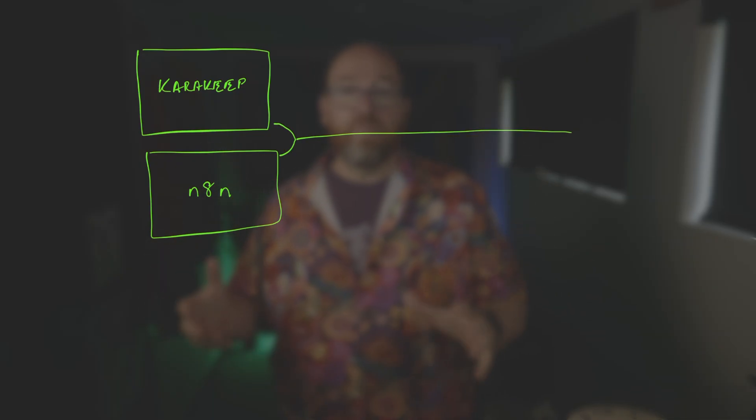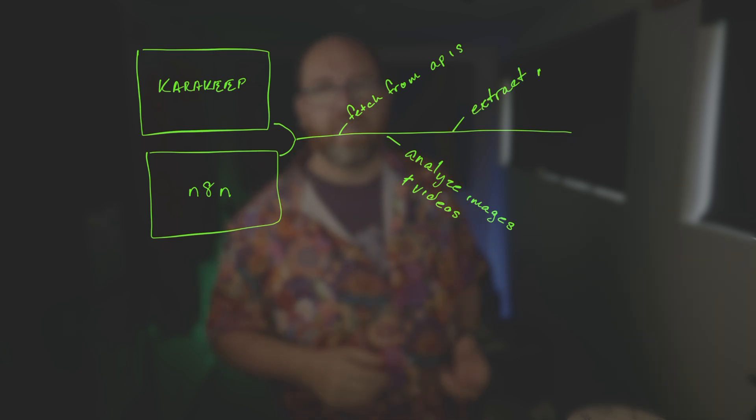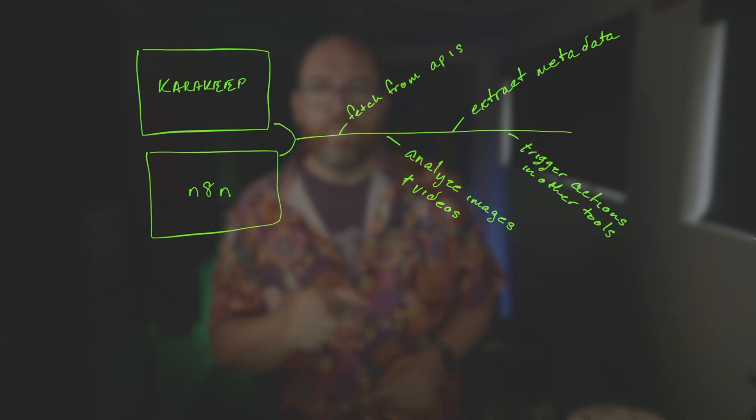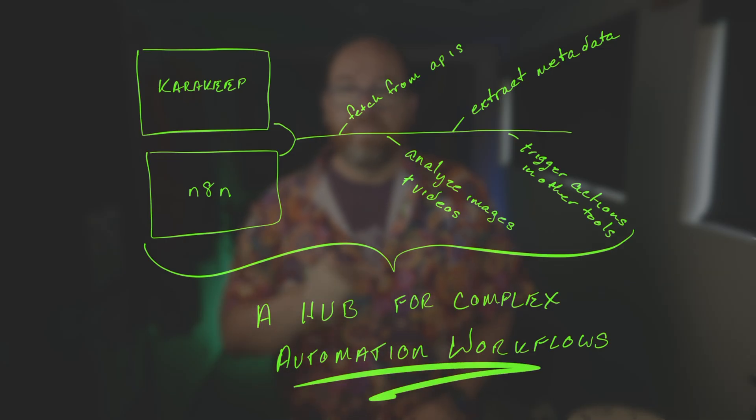But here's what makes using N8N with KaraKeep so powerful: you're not just limited to text processing. You can integrate with other services too — fetch additional data from APIs, analyze images or videos, extract metadata, or even trigger actions in other tools. The webhook and API combination turns KaraKeep into a hub for complex automation workflows. Now let's build the complete workflow that shows you exactly how this works. We're going to create a system where bookmarking a web article automatically extracts the full content and generates a custom summary with exactly the analysis you want.